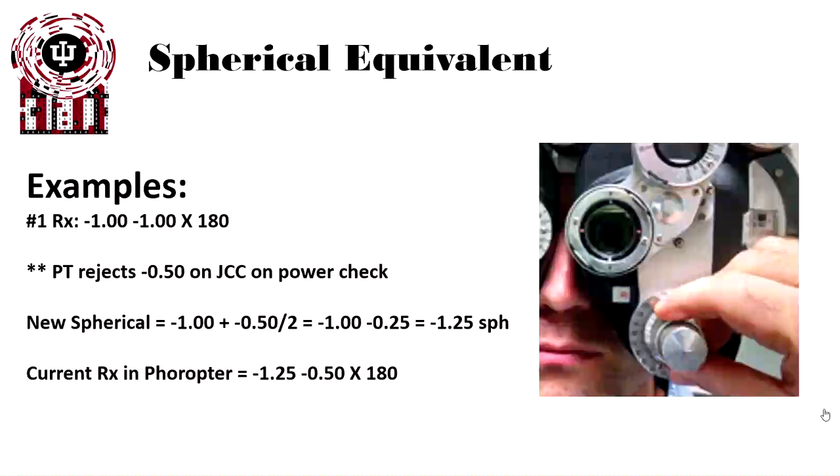That means they saw the white dot, thought the white dot looked better twice in a row. Their new spherical power then is minus 1 plus a half of that half diopter change, or a quarter diopter. Our new sphere power is minus 1 and a quarter. So the current Rx in the phoropter is minus 1.25 minus 0.50 at 180.